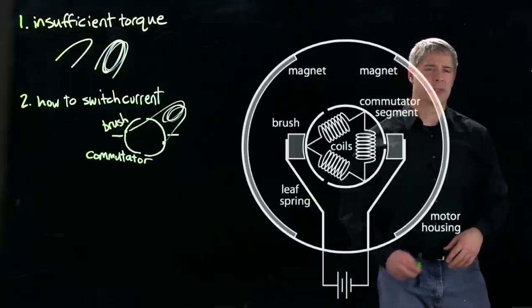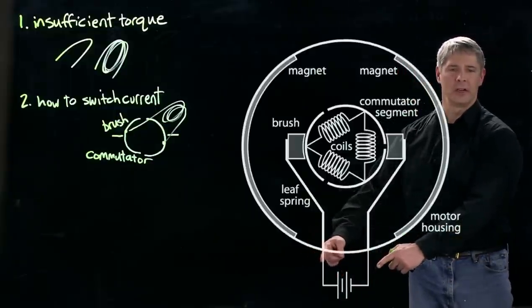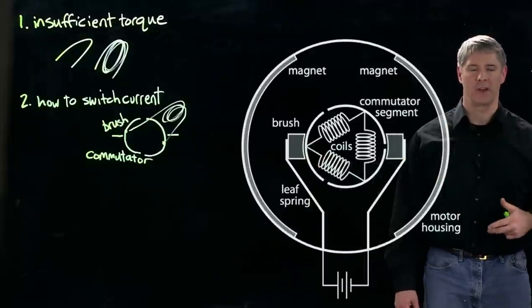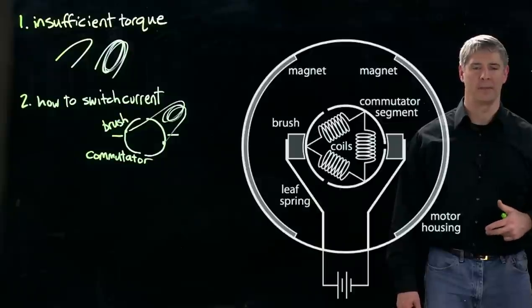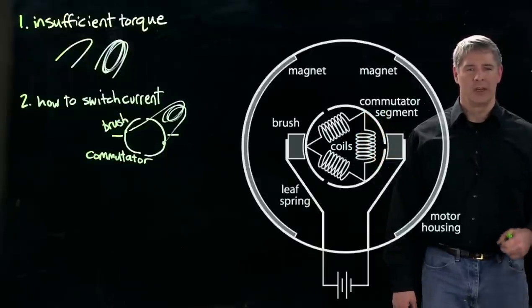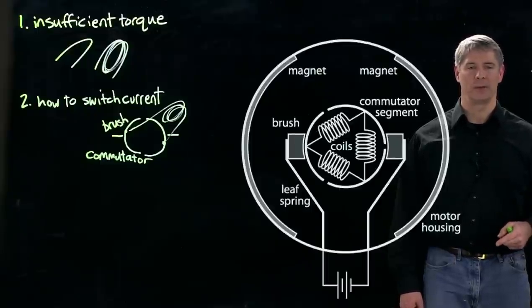Here's a very simple motor. Again, here's our two inputs here. They're coming up to these brushes here, and the brushes are usually made of some kind of soft metal like carbon graphite. Those brushes are sliding over these commutators, coming up to these commutator segments. In this simple motor, we have three commutator segments, and each of them is attached to the end of two different coils.